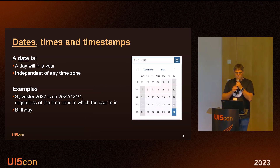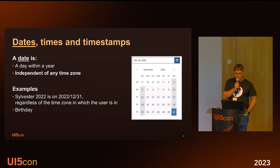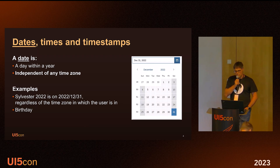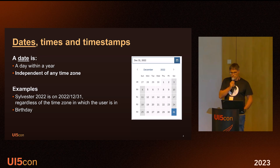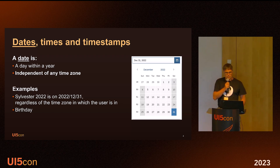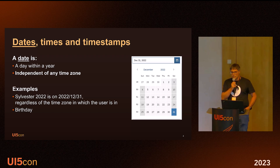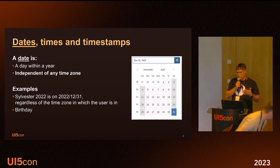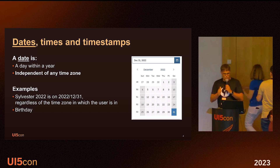Dates, times, and timestamps — what do we understand about dates? A date is a day within a year. It is independent of any time zone. For example, Sylvester 2022 is on the 31st of December 2022 — it doesn't matter which time zone you are in. Or my birthday is always on the same day whether I am in Sydney or in New York.